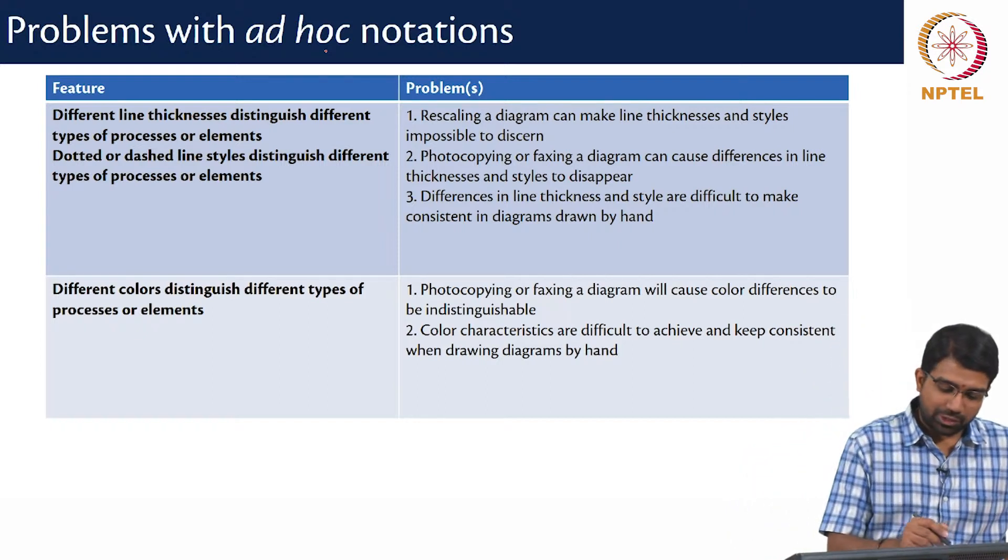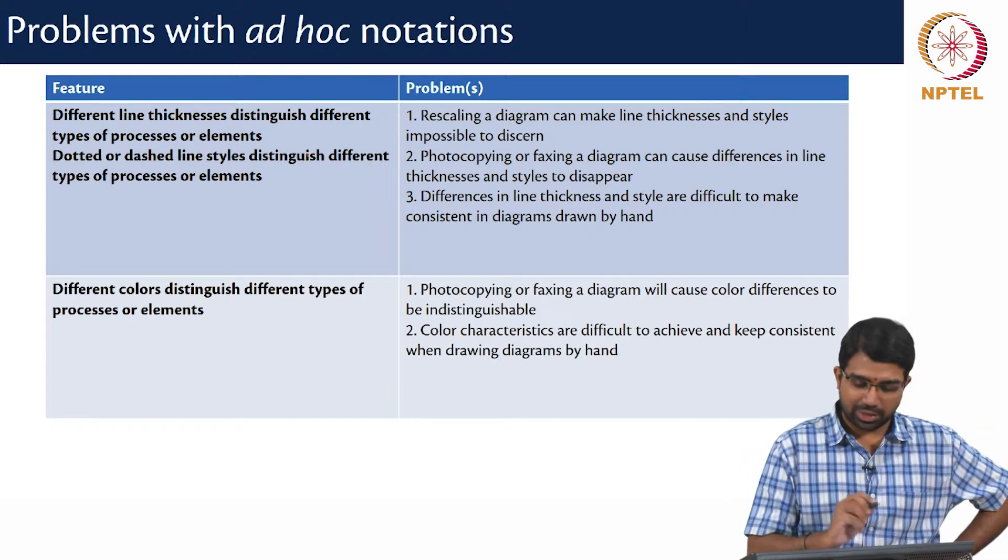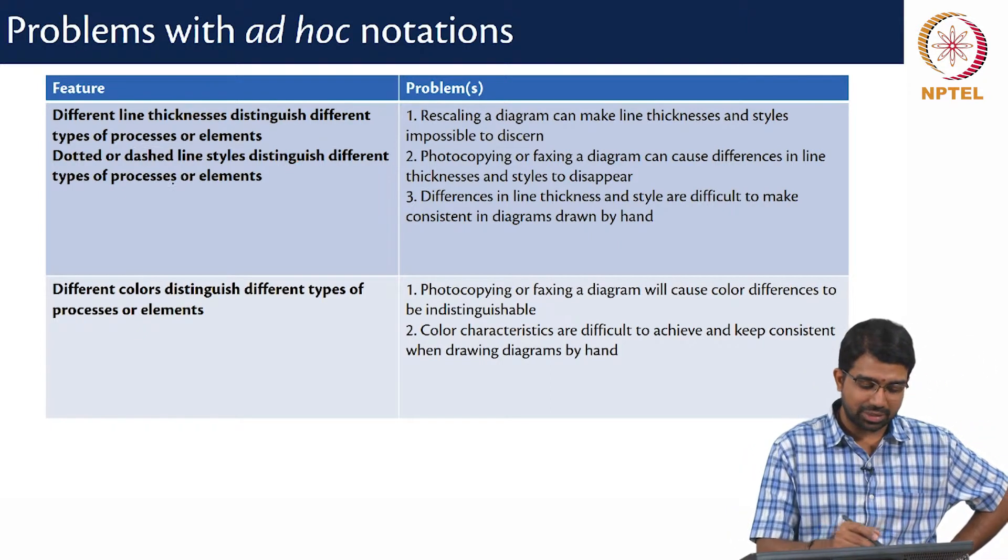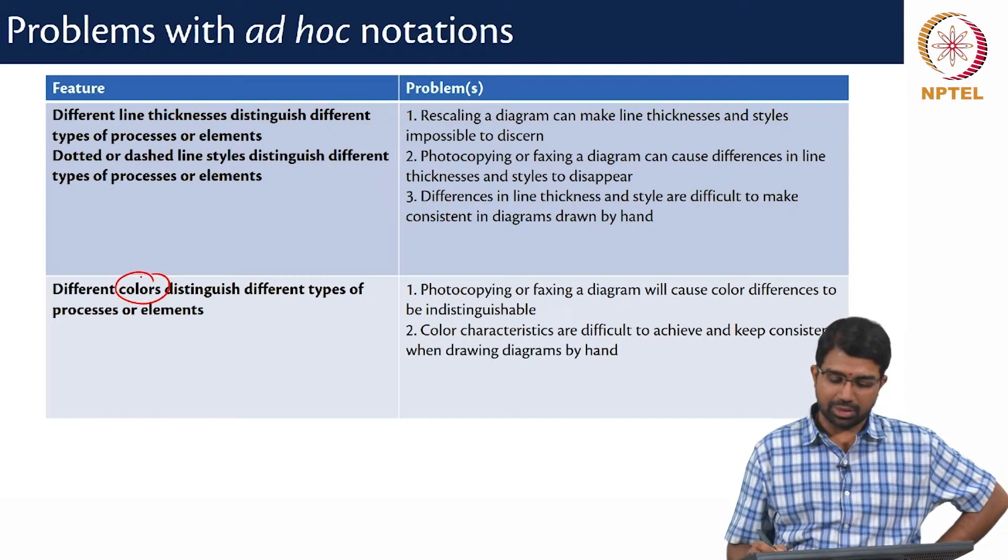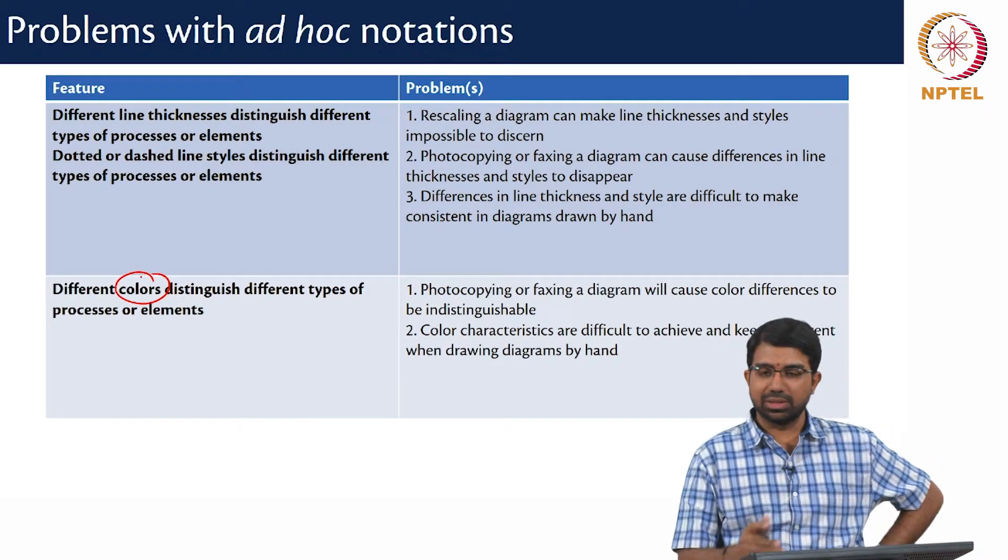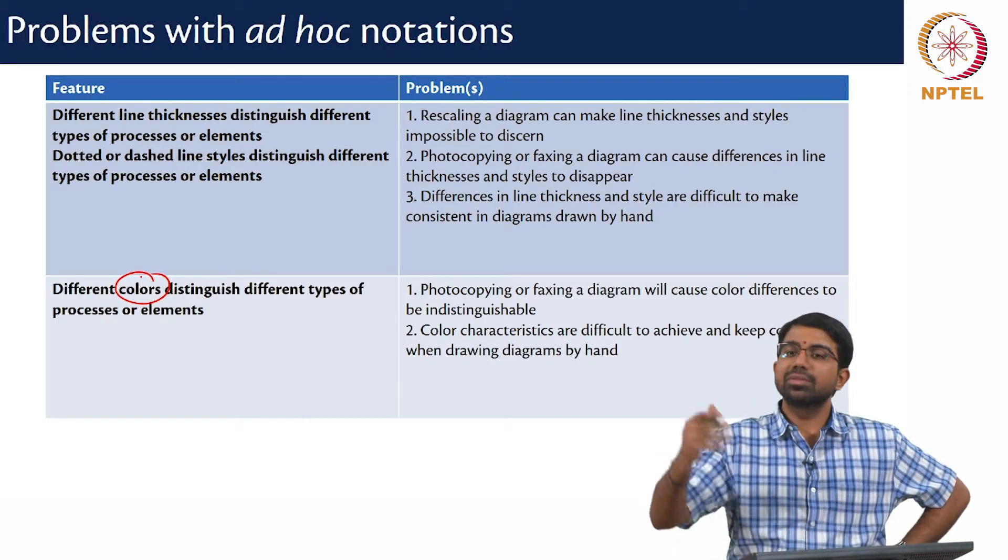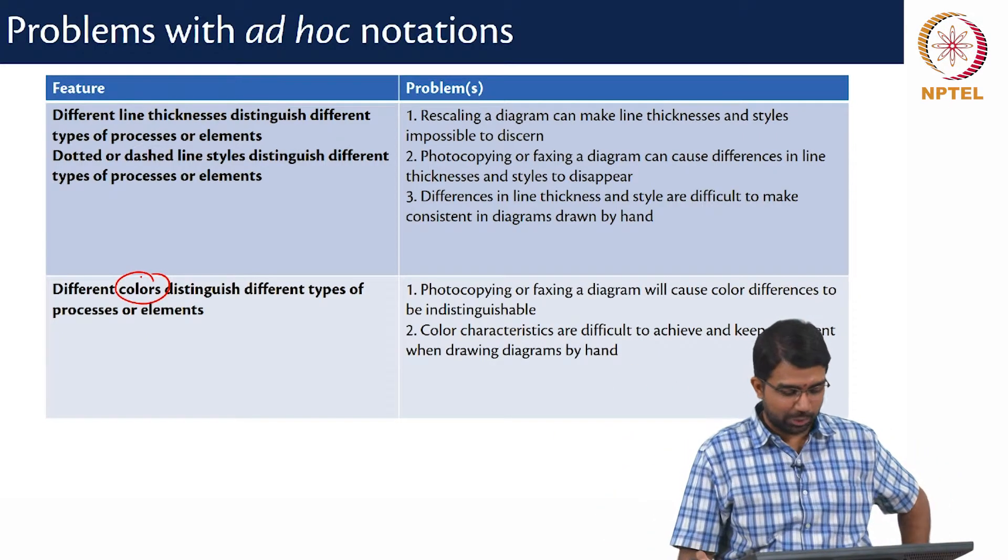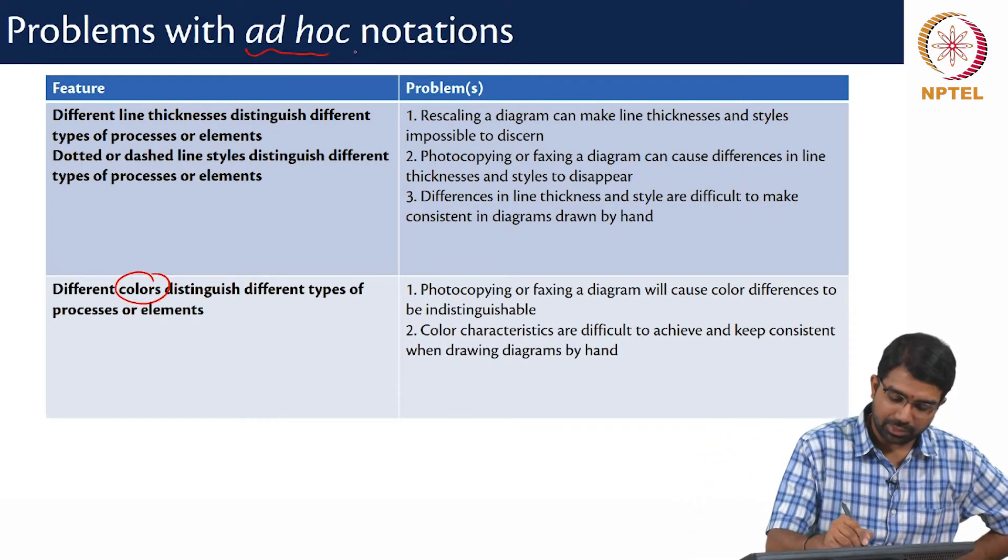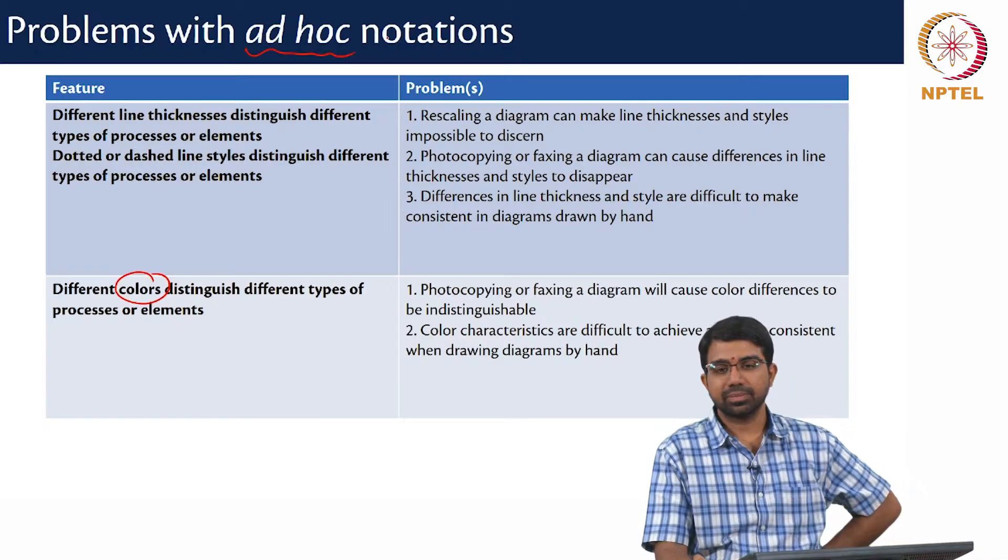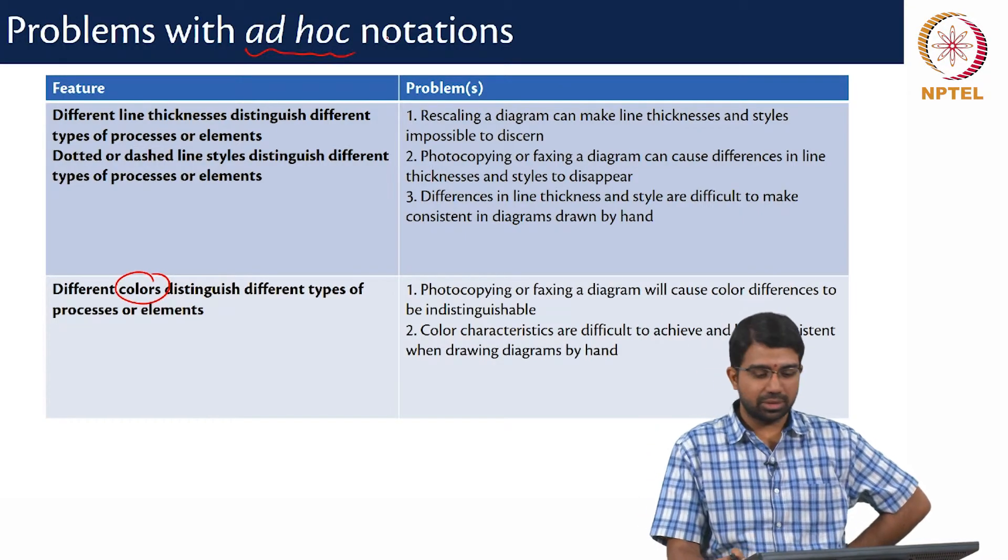So what are the problems? You have different line thicknesses to distinguish different kinds of process, dotted or dashed lines distinguish different types of process and worst is different colors and you can obviously imagine that all these will get mangled over a period of time when you start photocopying and transmitting and so on and all these notations are ad hoc, there is no standard.